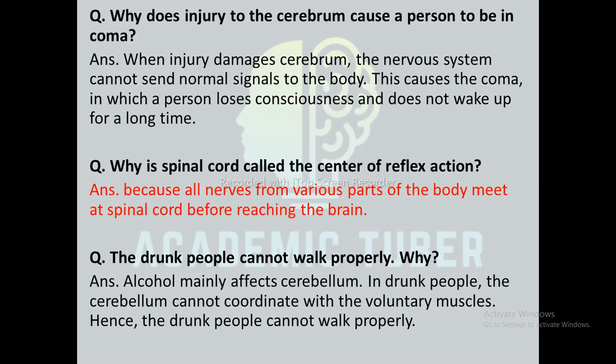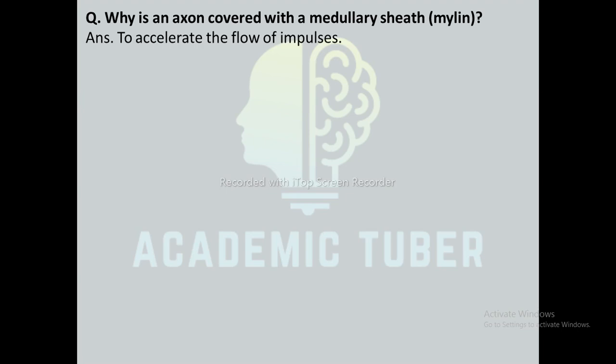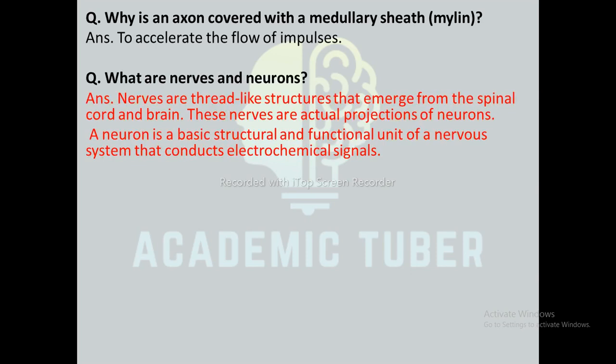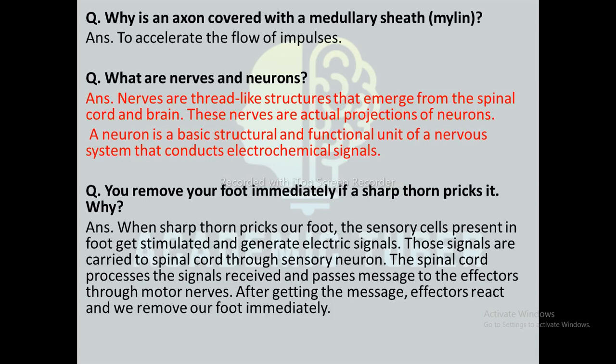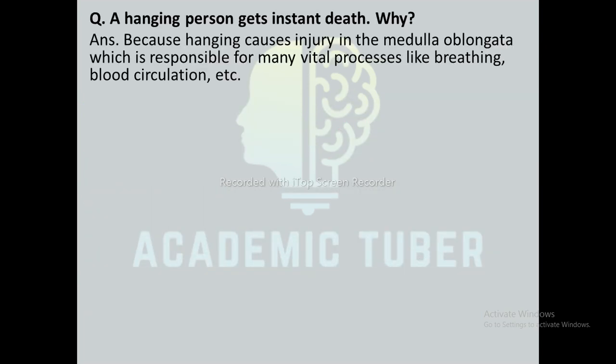Why can't drunk people work properly? Alcohol mainly affects the cerebrum. In drunk people, the cerebrum cannot coordinate with the voluntary muscles, hence they cannot work properly. Why is an axon covered with a medullary (myelin) sheath? The axon is covered with the myelin sheath to accelerate the flow of impulses. Why do you remove your foot immediately when a sharp thorn pricks it? Sensory cells in the foot get stimulated, generate electric signals carried to the spinal cord via sensory neurons, and the spinal cord passes the message to effector muscles via motor nerves, causing immediate removal of the foot.